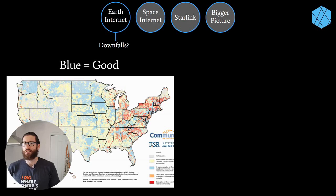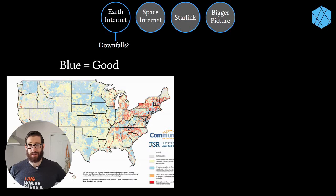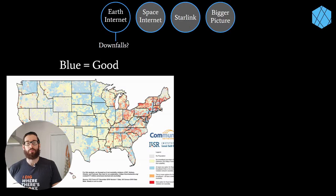Looking at a US map, blue indicates people have access to at least one ISP that hasn't violated net neutrality rules. Yellow, orange, and red show different variations of people having access to ISP providers that have violated net neutrality. Gray is where there's no population. It shows how potentially infected this industry can be if given too much power.